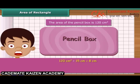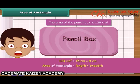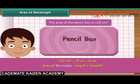So we can generalize that the area of any rectangle is obtained by multiplying its length and breadth. Since a square is a rectangle whose length and breadth are equal, the area of a square is obtained by multiplying its side by itself.